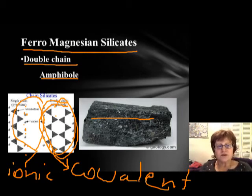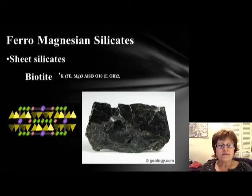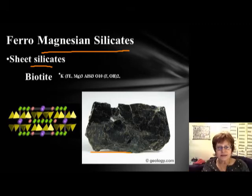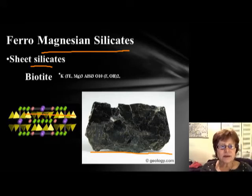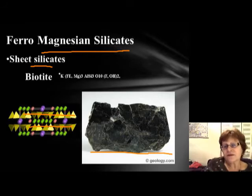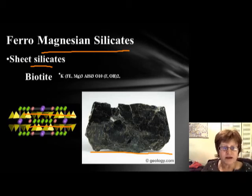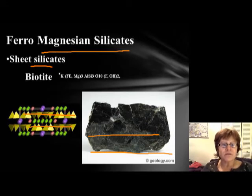The ferro-magnesium silicate with sheet silicate structure is biotite — the black colored mica. Because of the sheet structure, you don't even have to hit it; you can just take it apart easily. It has one perfect direction of cleavage. This is the iron-magnesium silicate with sheet silicate structure.